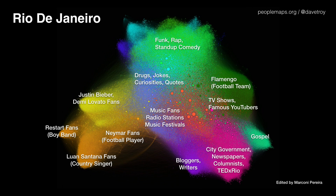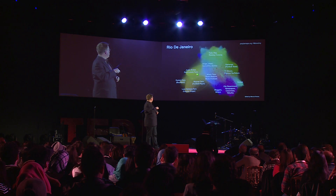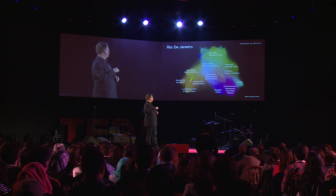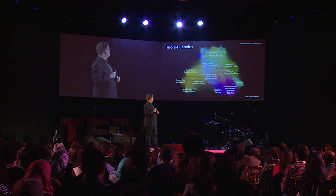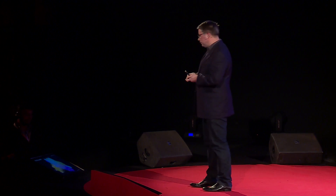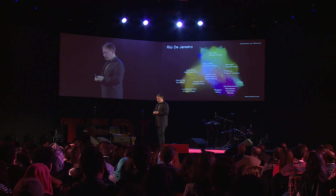This is Rio de Janeiro, and you can see it's shaped a little bit differently. Again, you have a group down here similar to Baltimore — TEDx people, bloggers, writers, and various people involved in different music groups and fan communities. Then up here you have funk, rap, stand-up comedy, drugs, and other things that probably indicate more of the favela community. You can see how Rio runs in a spectrum as well, but there's a lot more mixing in the middle.